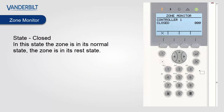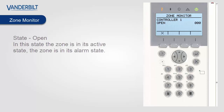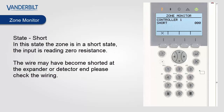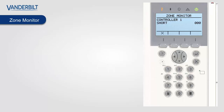Now let's look at some of the different states. State closed is the normal state for a zone — it is in its rest state. When a zone is open it is in its active state and the zone if armed would cause an alarm. The disconnect state means the input is reading an infinite resistance; the wire may have come disconnected so we advise checking the wiring. State short means the input is reading zero resistance; the wire may have become shorted at the expander or detector end, so please check the wiring. Note: a disconnect or a short will trigger a tamper condition on the SPC system.